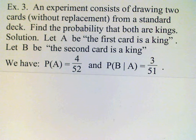The probability of A, the probability of drawing a king out of a deck of 52 cards, since there are four kings in the deck, is 4 out of 52.